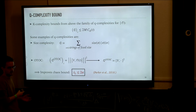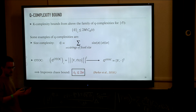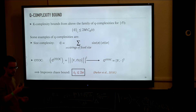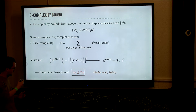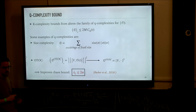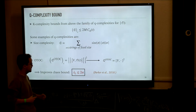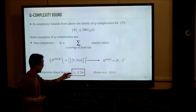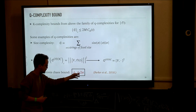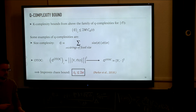Therefore the OTOC is subject to the Q-complexity upper bound. In maximally scrambling systems, we know from works like Maldacena and Stanford that out-of-time order correlators grow exponentially with an exponent which is the Lyapunov exponent. The fact that this is bounded from above by complexity directly implies that the Lyapunov exponent is bounded by the Q-complexity exponent alpha.